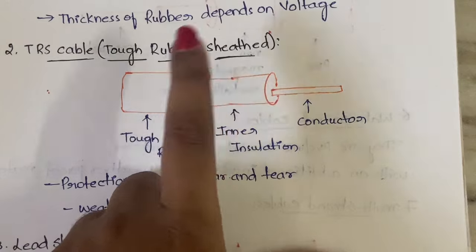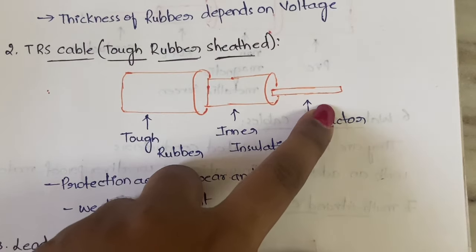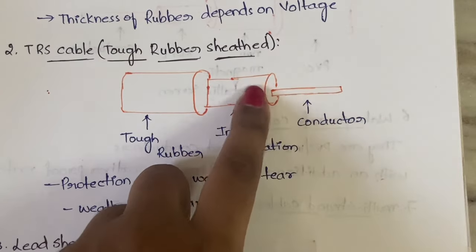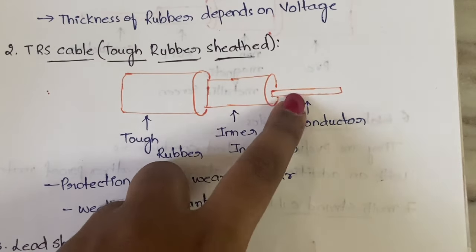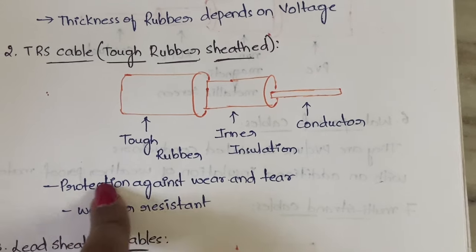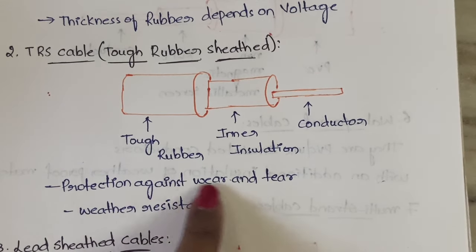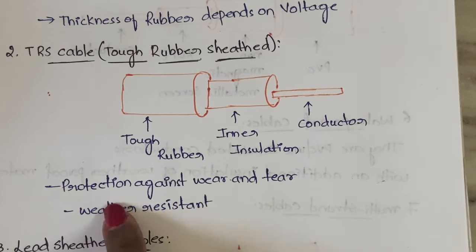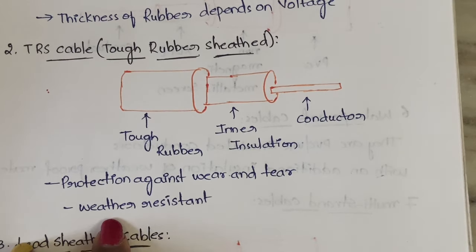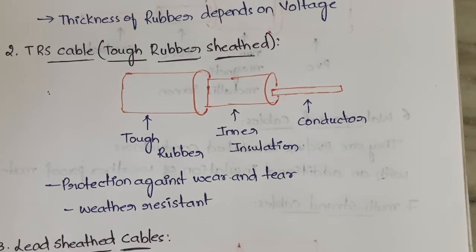Next is TRS cable — Tough Rubber Sheet. You will have the conductor, then inner insulation around it, and around that a tough rubber outer layer. This tough rubber provides protection against wear and tear and is weather resistant — whether it is heat, rain, or any weather condition.